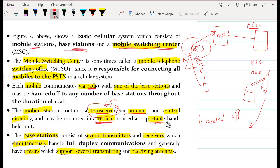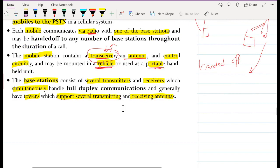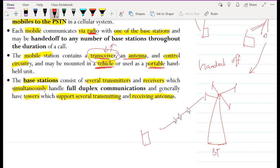The base station consists of several transmitters. The BTS that I'm drawing like a triangle here may have more than one transmitter. These are antennas that are capable of communicating with several users. So one antenna might connect to several users, another antenna might connect to several users. Do not be confused when you hear that a base station consists of several transmitters and receivers, which simultaneously, the keyword here is very important, simultaneously handle full duplex communication.